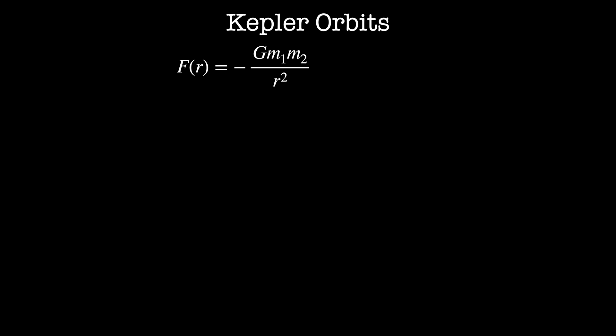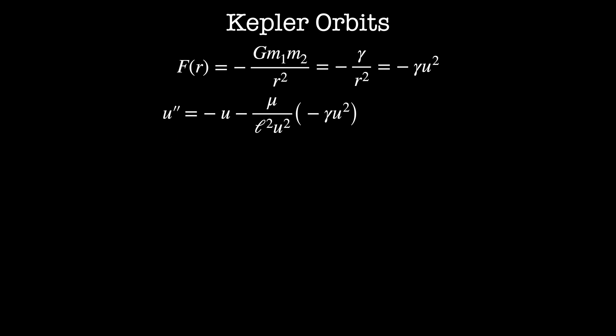For the rest of the video, we focus on inverse square law forces, giving Kepler orbits for Newtonian gravity and bound states of the hydrogen atom for electrostatics. The gravitational force is given by minus G M1 M2 / r², with the prefactor combined into a constant gamma. In the transformed coordinates, the gravitational force is minus gamma u². The equation of motion simplifies: the two u² terms cancel, leaving u'' = minus u plus gamma mu / l².